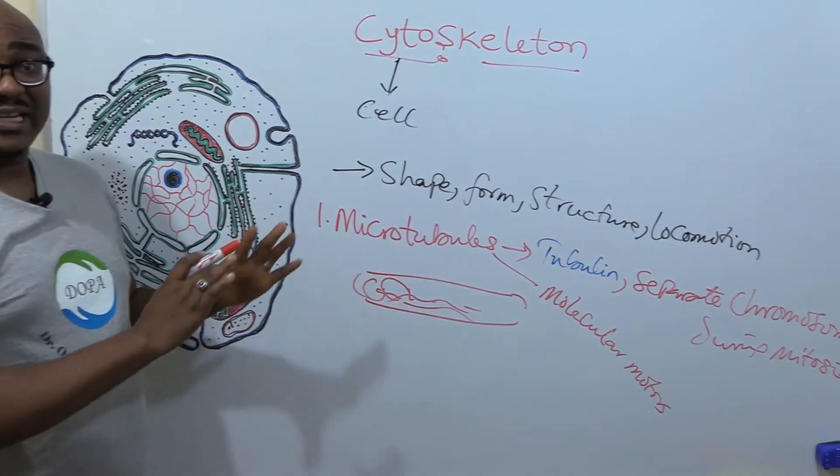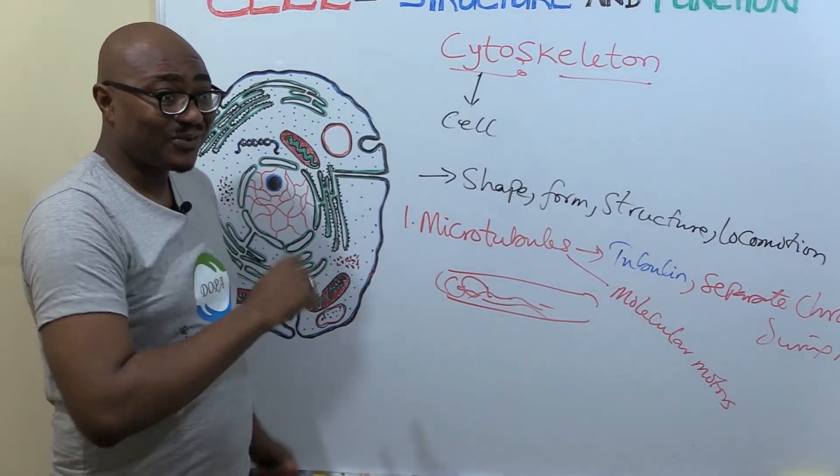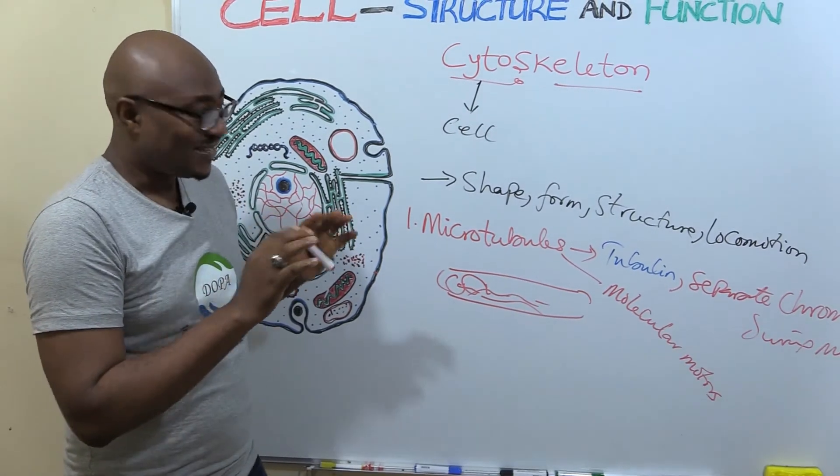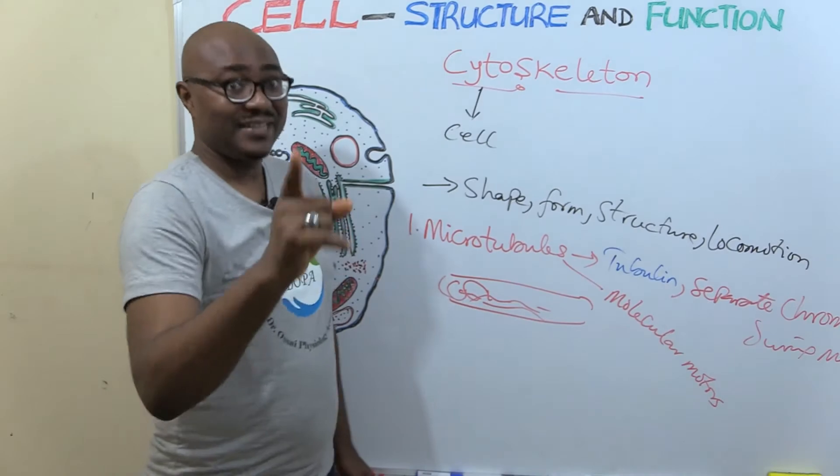Now, microtubules are the largest. So we're going to be looking at two others that are very important. One of them plays the role in contraction of muscle, other cytoskeletal elements. I'm going to be looking at that after this break.